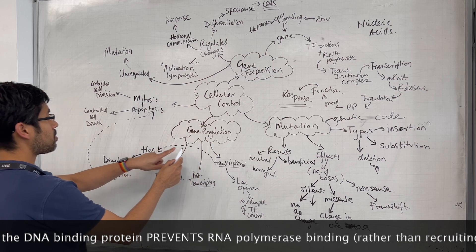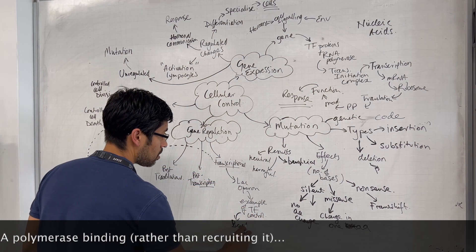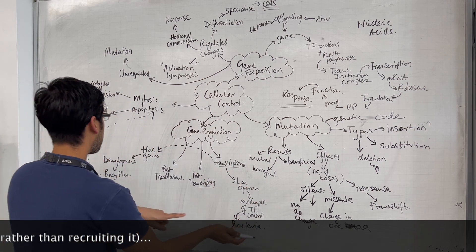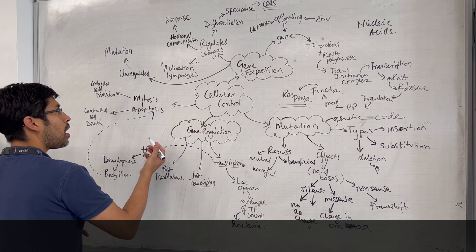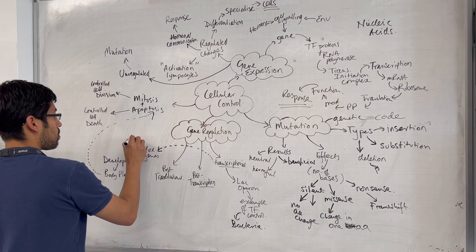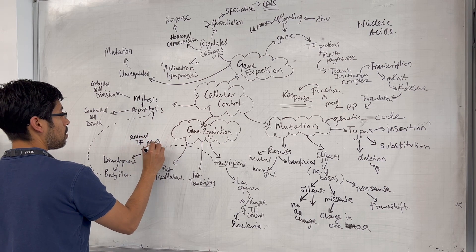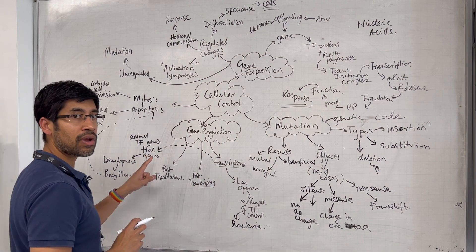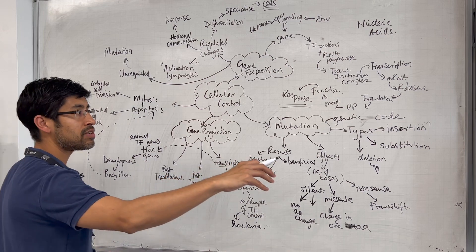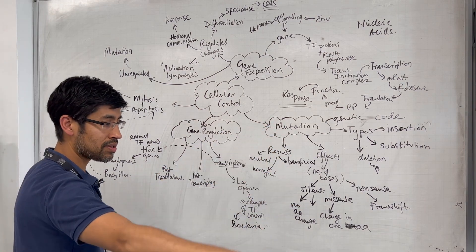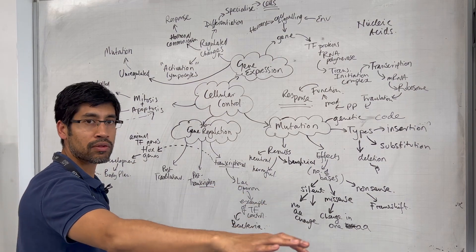Hox genes are an example in animals — they are animal transcription factor genes. They are transcription factors that bind to the DNA, setting off transcription of sets of genes which, when expressed in certain cells, cause those cells to specialise into particular parts of the body.